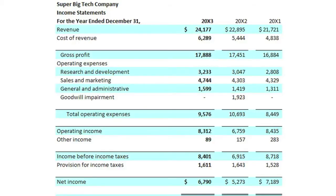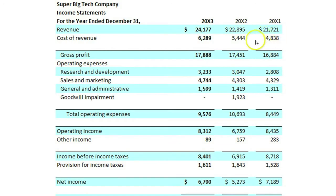For this topic, we will analyze a simple, comparative, multi-step income statement for a three-year period. The company, Super Big Tech Company, is fictitious, but you can imagine that it competes in the same industry as Microsoft. Please stop and take a moment to perform a horizontal scan of each of SBTC's accounts on its comparative income statement to see what positive, negative, and unusual patterns you can recognize.